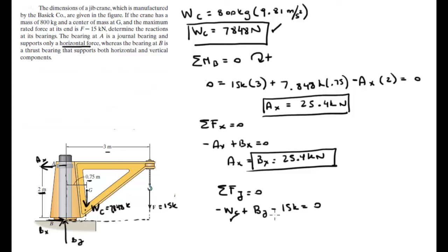We already got the Wc is the first thing we found so when you solve for By you get that By is equal to 22.8 kilonewtons.